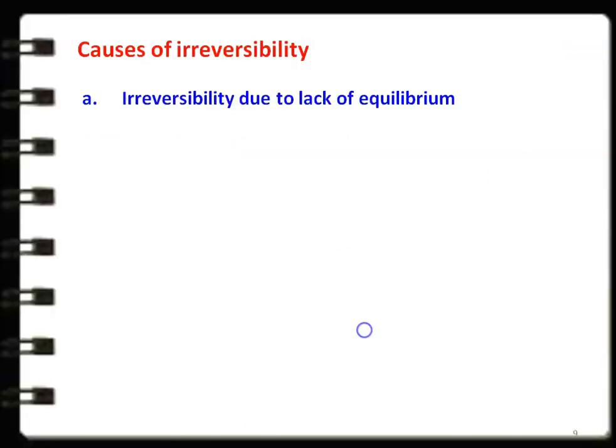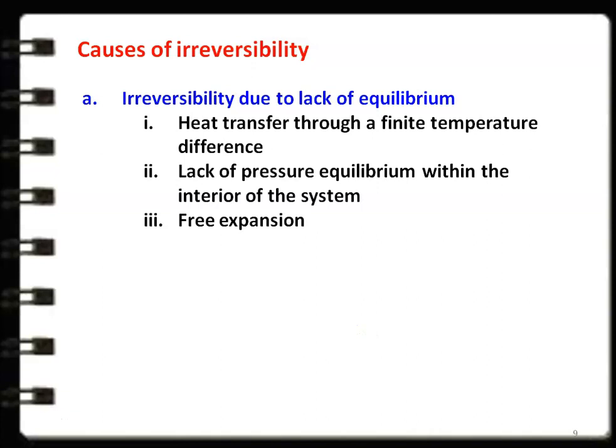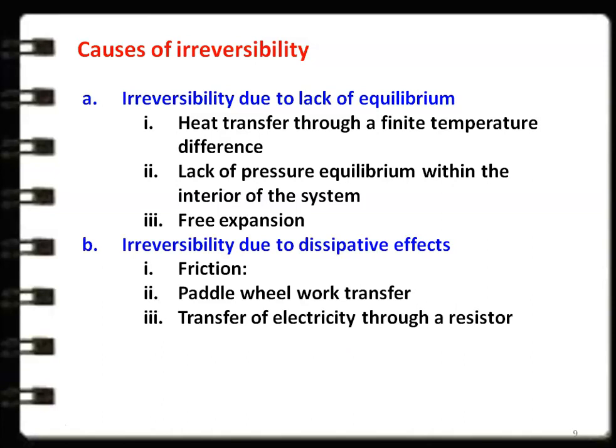The causes of irreversibility fall into two groups. The first is irreversibility due to lack of equilibrium, which includes heat transfer through a finite temperature difference, lack of pressure equilibrium within the system or free expansion. The second is irreversibility due to dissipative effects like friction, paddle wheel work transfer, and transfer of electricity through a resistor. Among all causes, friction is the major cause of irreversibility in mechanical and thermal engineering.